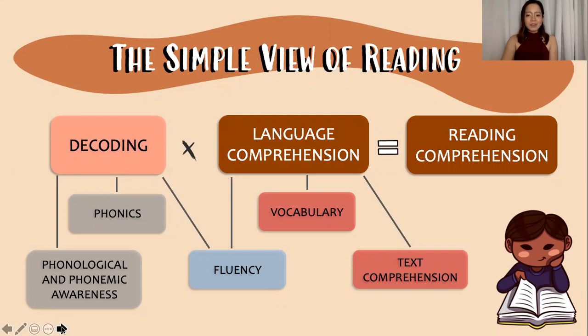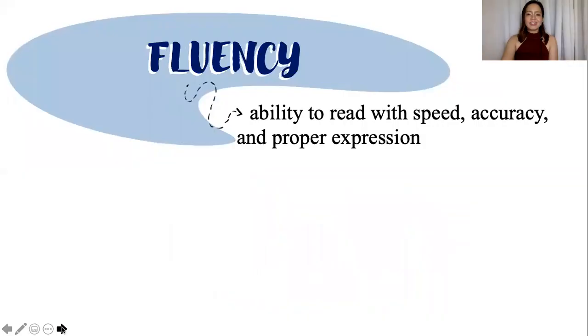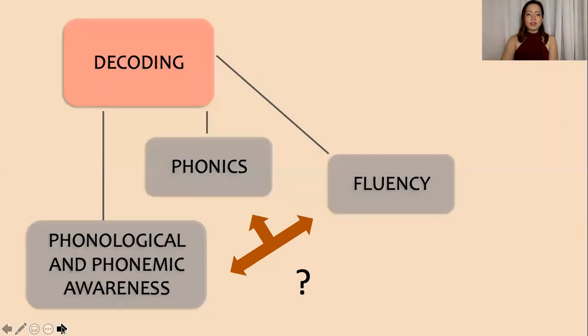And the last component is fluency. You can see fluency in both decoding and comprehension. It is the ability to read with speed, accuracy, and proper expression. Readers who have difficulty with fluency tend to read slowly and with inappropriate expression. Some have difficulty uttering the sounds.